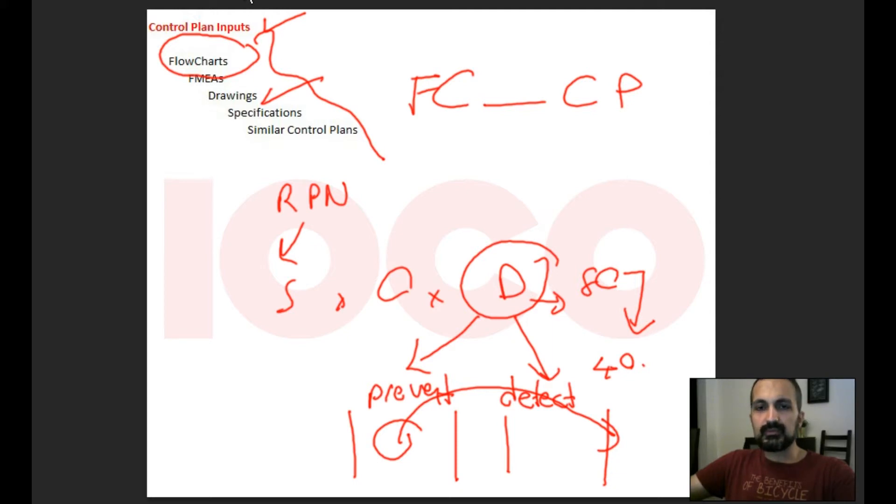The last input is similar control plans. It's very simple. For example, you make a control plan regarding a surface treatment - a new process. You make a risk evaluation, you make an FMEA study for the surface treatment, and this is the first time you make a treatment process. But before, you already had a painting process.